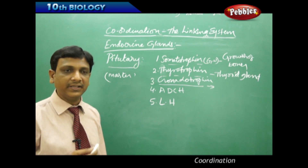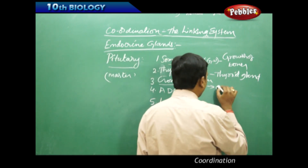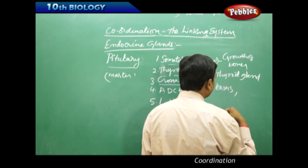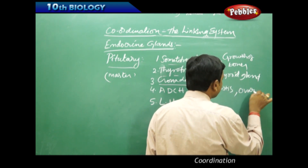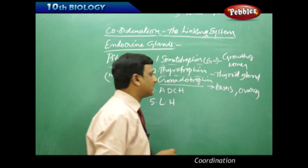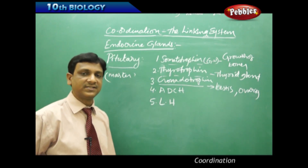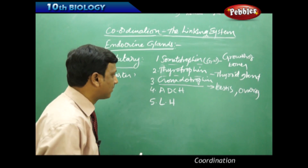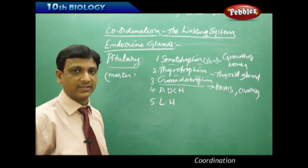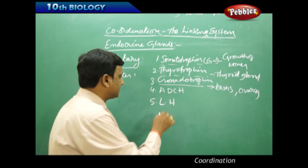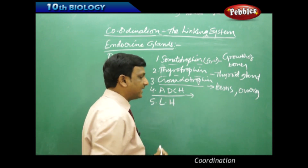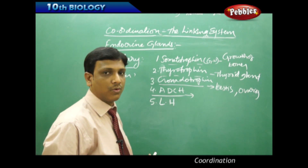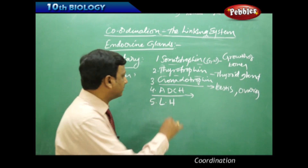Next is gonadotrophin, which activates the gonads — the reproductive organs of males and females. In males, the reproductive organs are the testes; in females, they are the ovaries. The growth and functioning of these testes and ovaries is controlled by gonadotrophin.